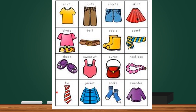The next one is tie. Tie. T-I-E. Then jacket. Jacket. J-A-C-K-E-T. Next is socks. S-O-C-K-S — there is an S at the end. And the last one is sweater. Sweater. S-W-E-A-T-E-R. Sweater is a knitted jacket or jersey.